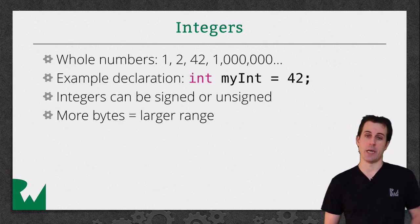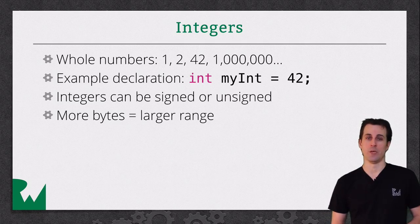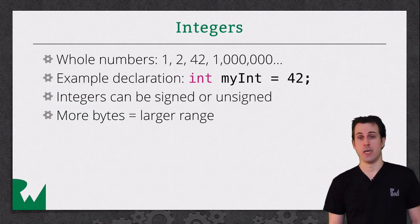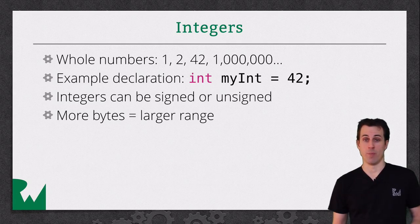When you choose an integer data type, you're choosing how many bytes you want to use to store the value. The trade-off is the more bytes you use, the bigger the potential value you can store, or the smaller, basically the wider range, but you're using more memory, obviously.